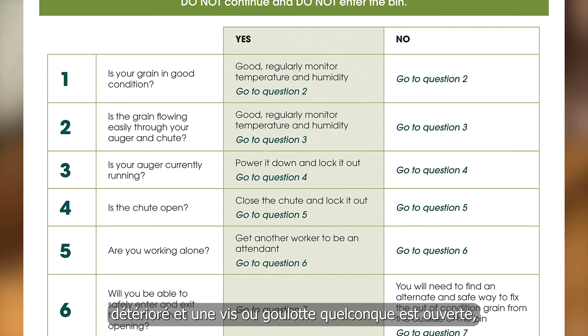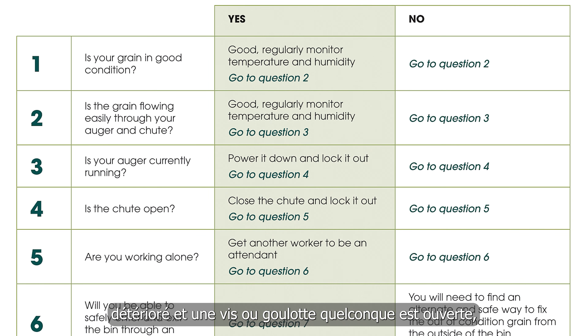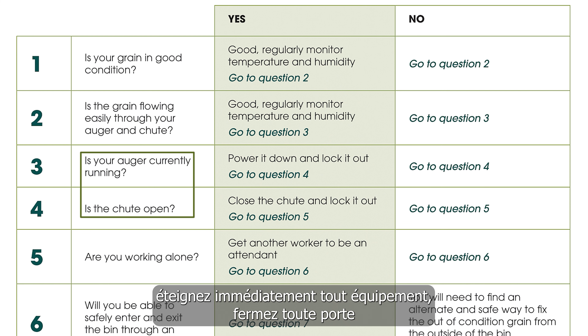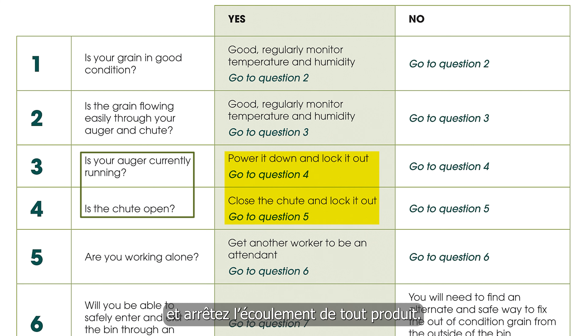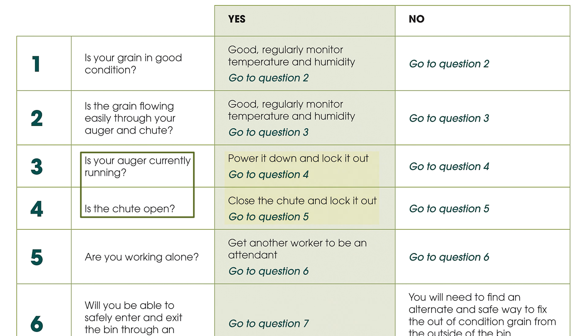If grain is out of condition and any augers or shoots are open, immediately power down any equipment, close any doors, and stop the flow of any product.